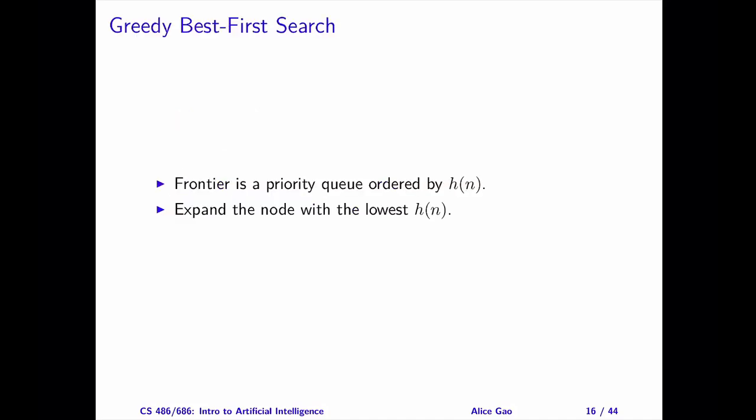In the previous video, I introduced the lowest cost first search algorithm. It uses the cost function to determine which state to explore next. Beside the cost function, the heuristic function is another source of information that a search algorithm can use.